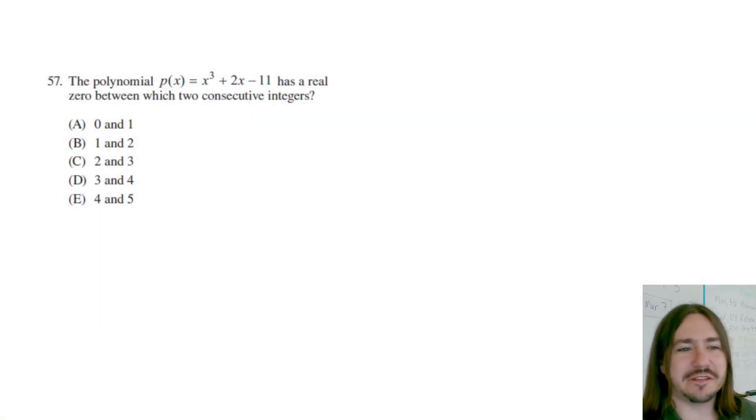Hey y'all, welcome back. Number 57 says the polynomial p of x equals x cubed plus 2x minus 11 has a real zero between which two consecutive integers.